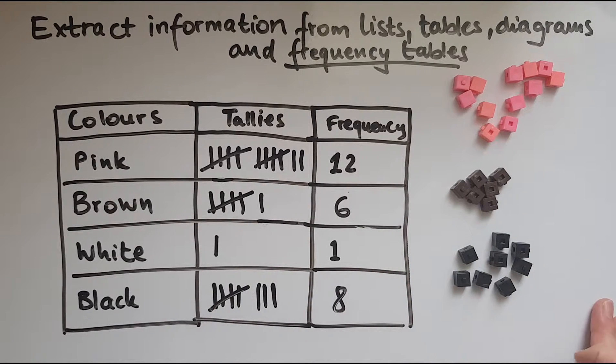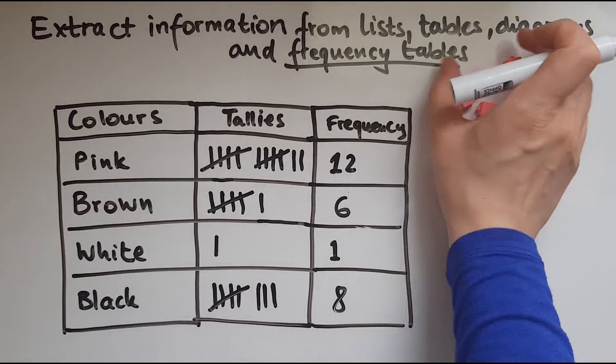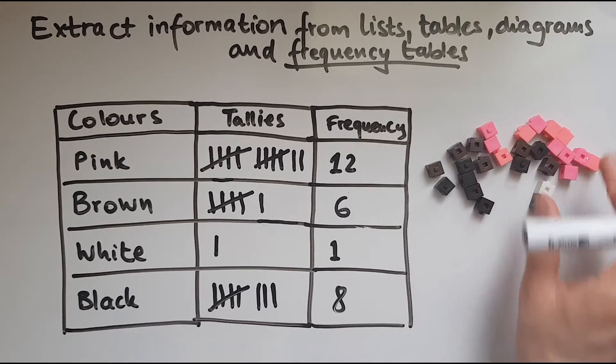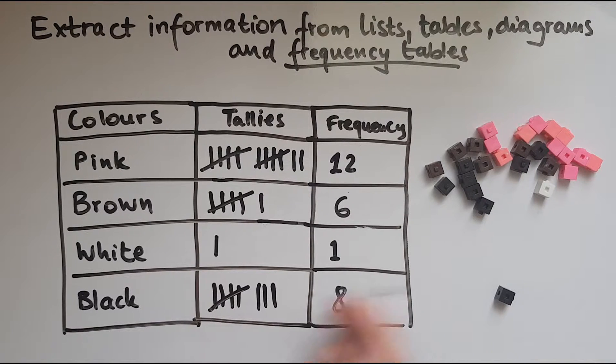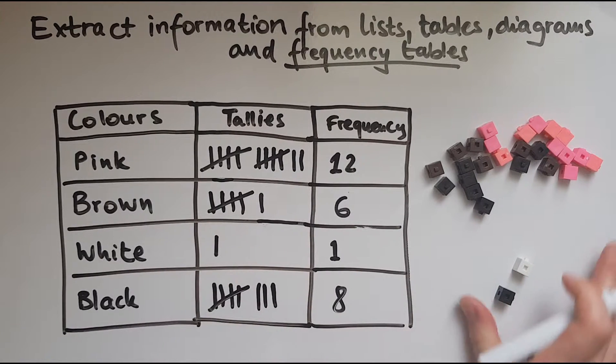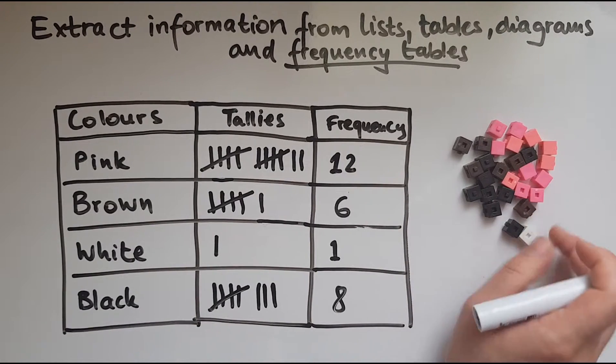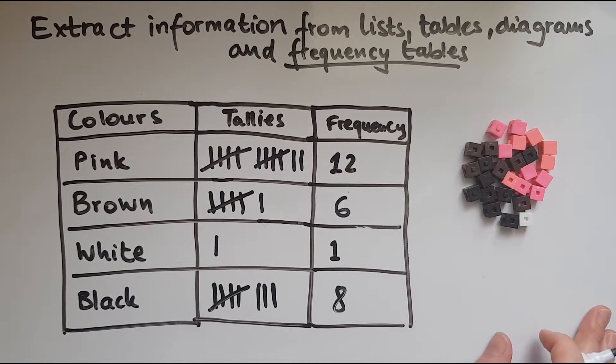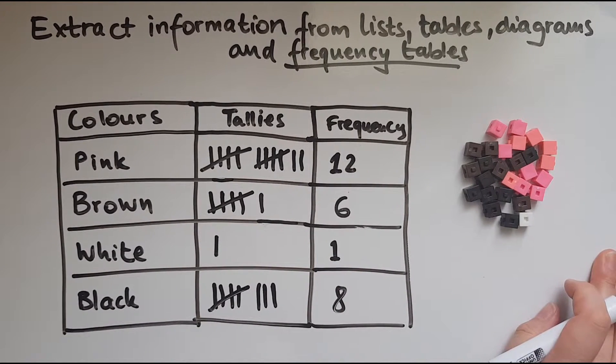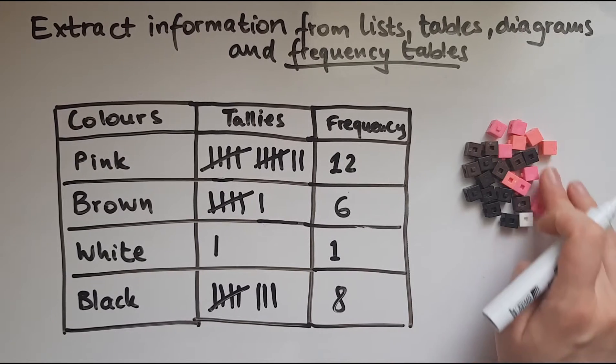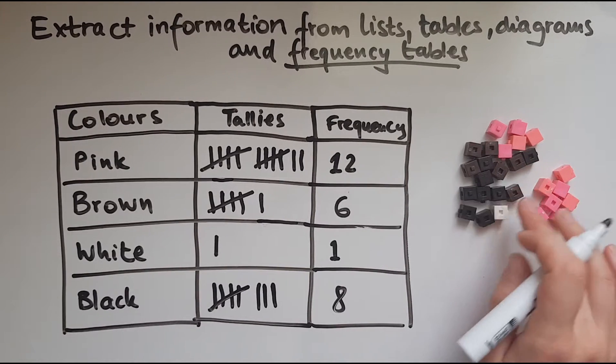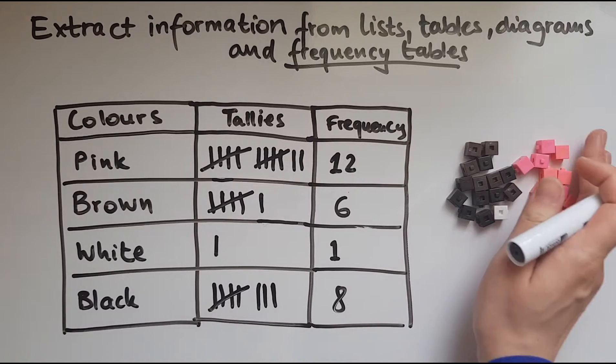So we've recorded these. Now for me it was easy because I separated them into colours first. But if they were mixed up, I would go, right, okay, black. Where is black? Go to black and mark one. Then comes white. Okay, where is white? Mark one. And that's what normally happens when you go around, for instance, and you want to investigate the favourite food in your class.